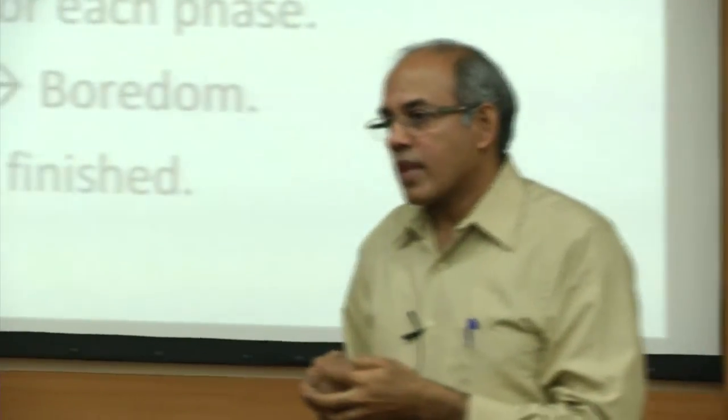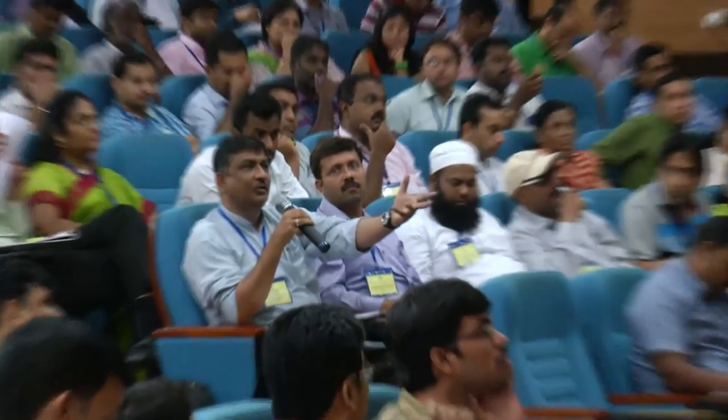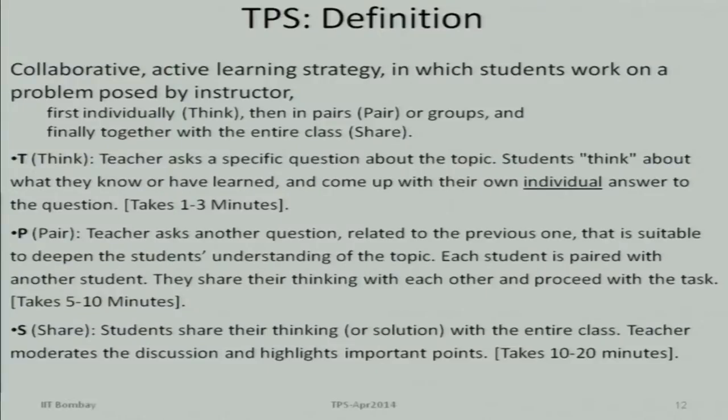What is the ideal time for each activity, and what is the frequency in a 90-minute class? The think phase should be about one to three minutes — it should not be very long, otherwise people get bored. The pair phase is about five to ten minutes. The share phase is approximately ten to twenty minutes. So about 20–25 minutes total for one such activity — in a one-hour session, you cannot do more than two, maximum three activities.